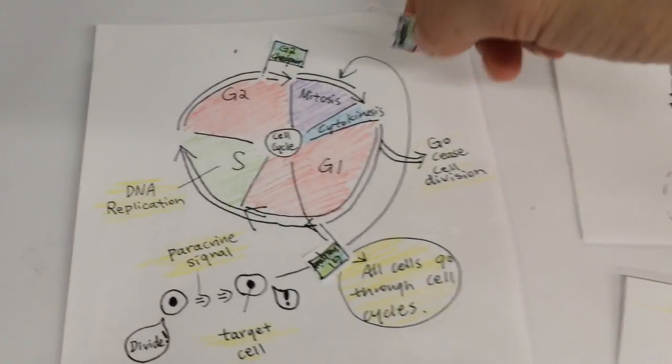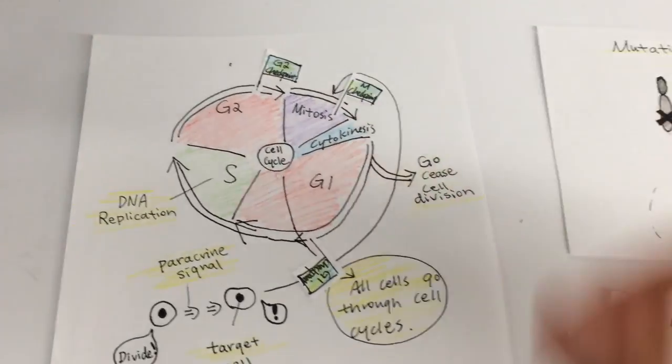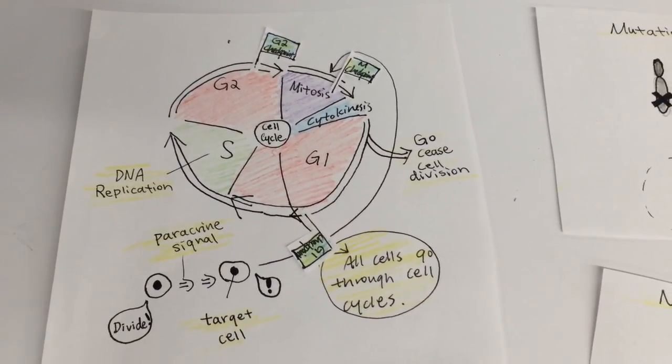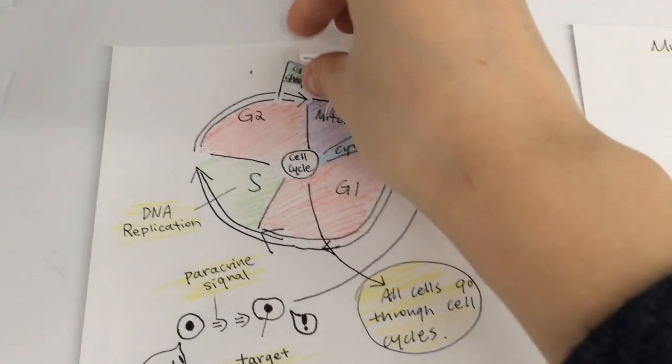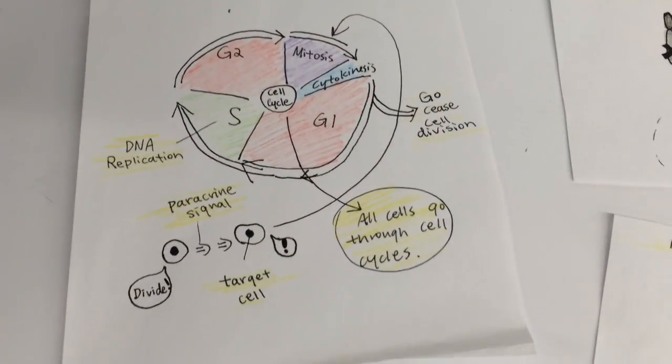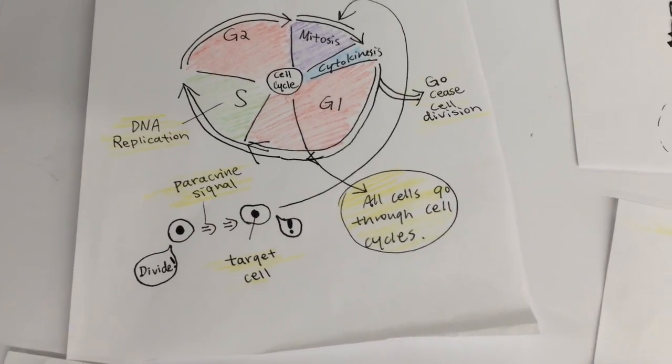However, in a cancerous cell, the mutation in genes causes the cell to ignore the orders and signals telling the cell to stop the cycle, therefore continuing the cell cycle and dividing indefinitely.